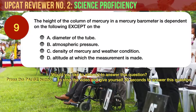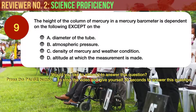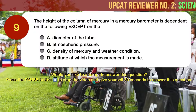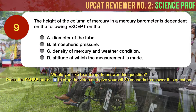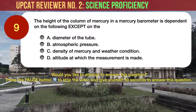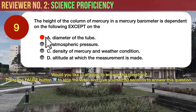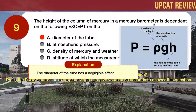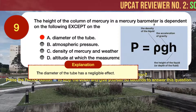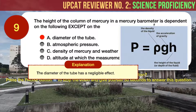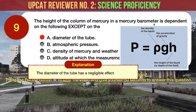Question number 9. The height of the column of mercury in a mercury barometer is dependent on the following, except on the A, diameter of the tube. B, atmospheric pressure. C, density of mercury and weather condition. D, altitude at which the measurement is made. The correct answer is A: the diameter of the tube has a negligible effect. Looking at this mathematically, pressure is equal to the density of fluid times acceleration due to gravity times change in height of the fluid. Therefore, the diameter of the tube does not play into the equation.